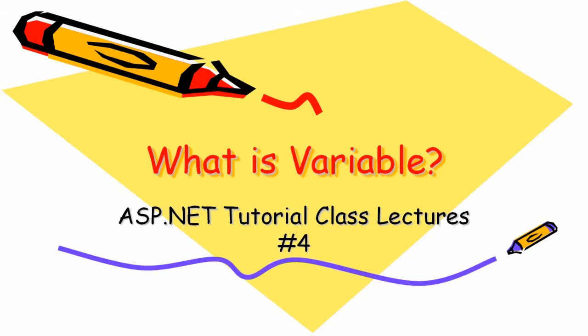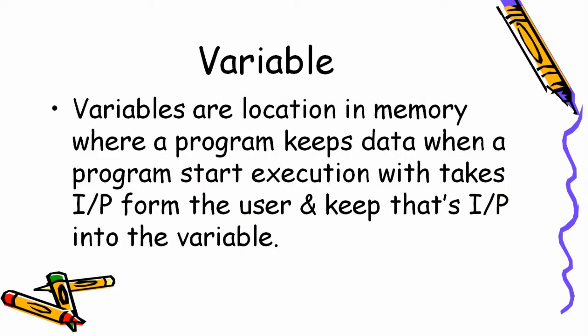Hey guys, welcome back to CoderBaba. This is ASP.NET tutorial, lecture 4. In this video I am talking about variables. Variables are locations in memory where a program keeps data when it starts execution — it takes input from the user and keeps that input in a variable. So a variable is a name of a memory location. For example, if we have integer 'a', then 2 bytes will be reserved in memory and we can store the value there.